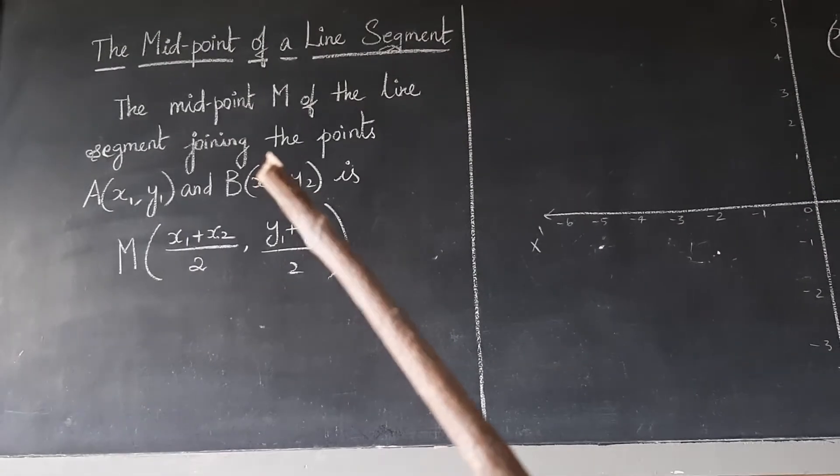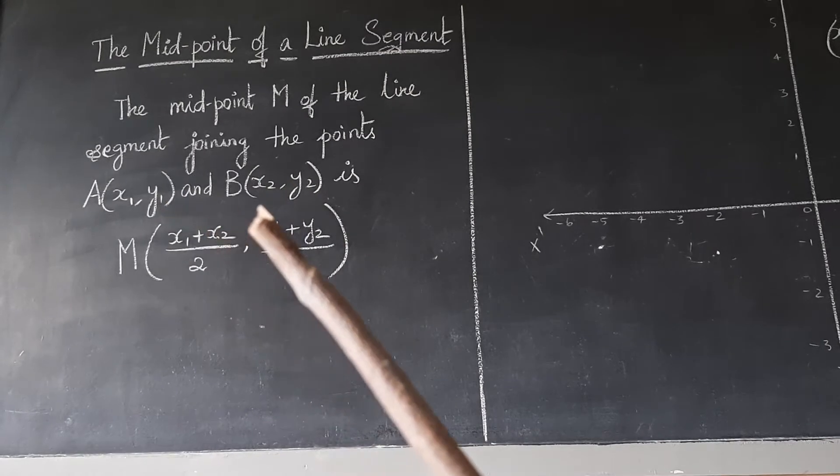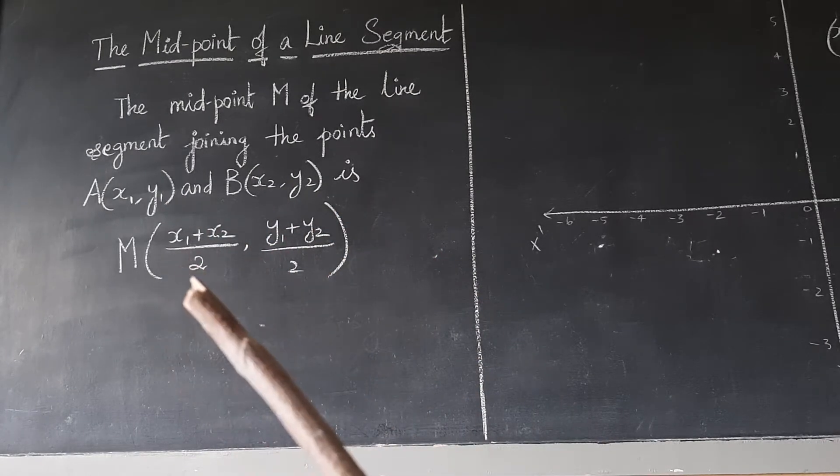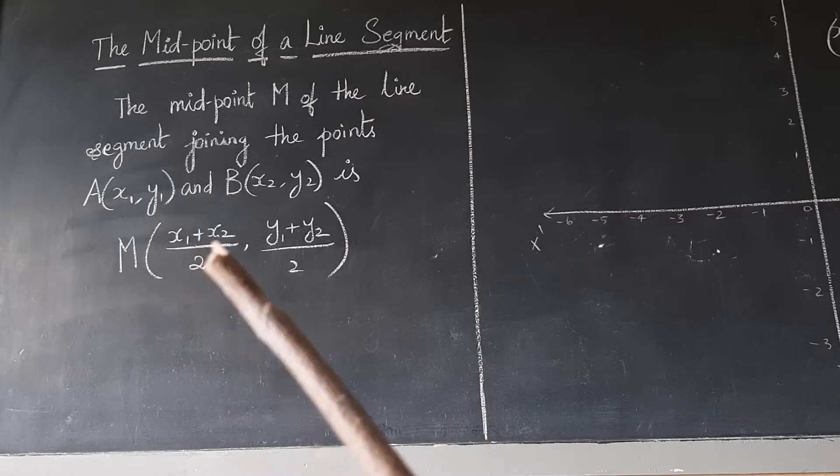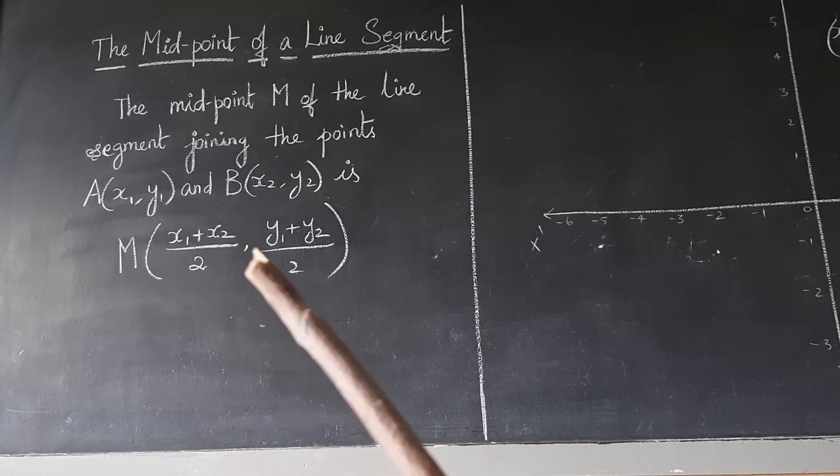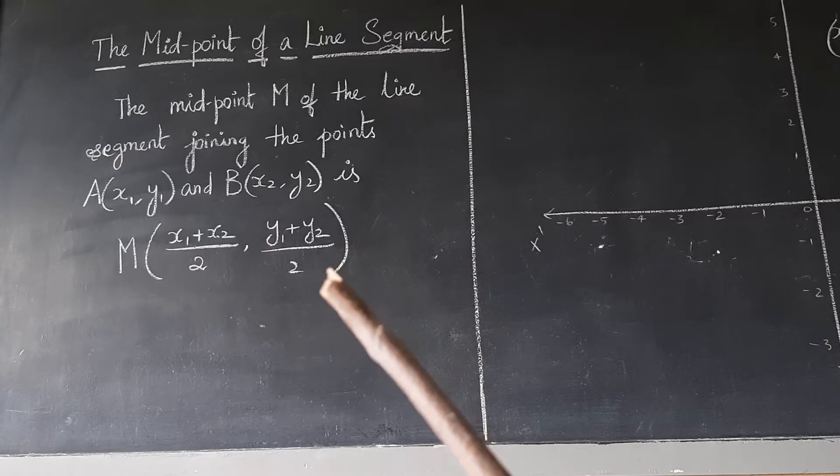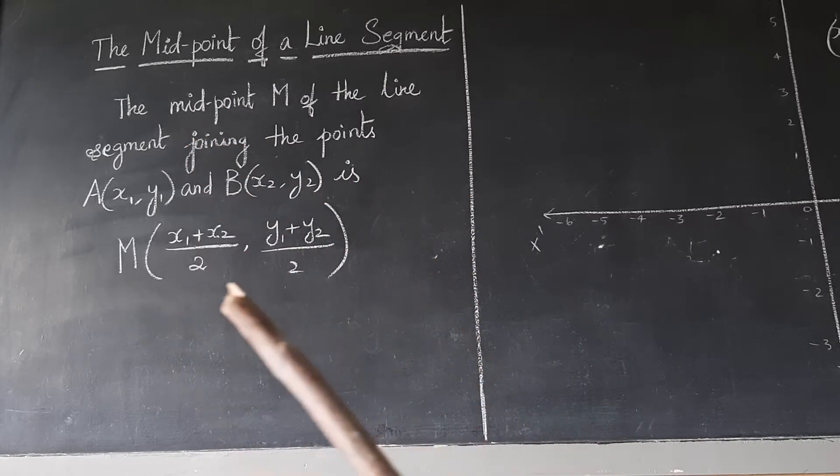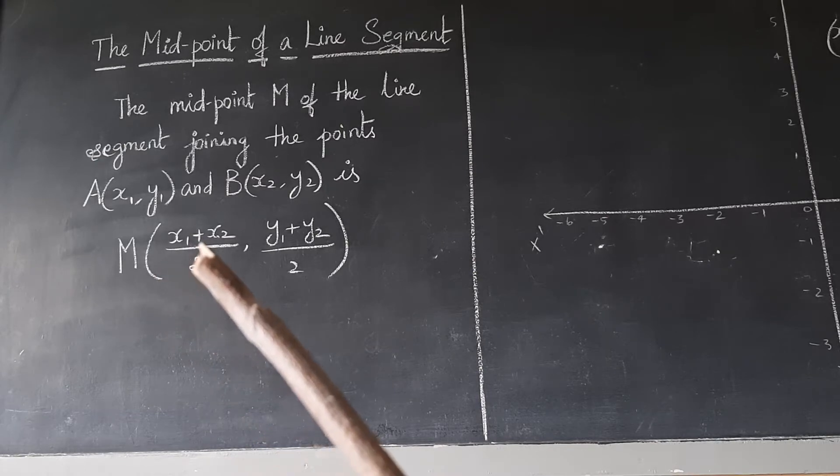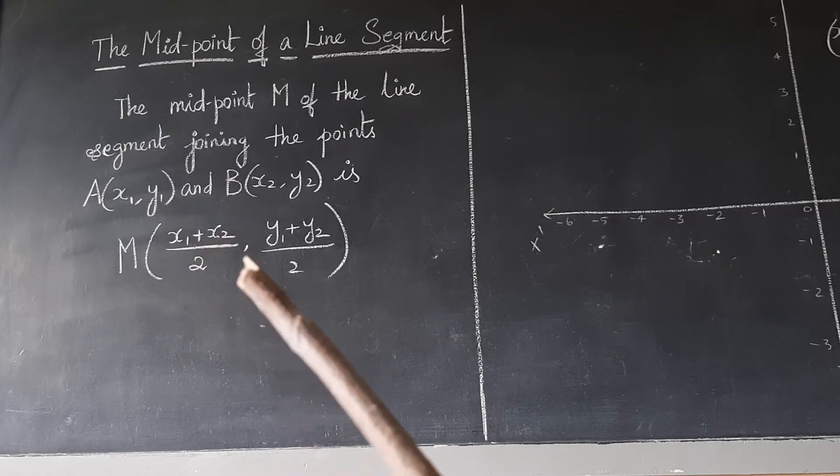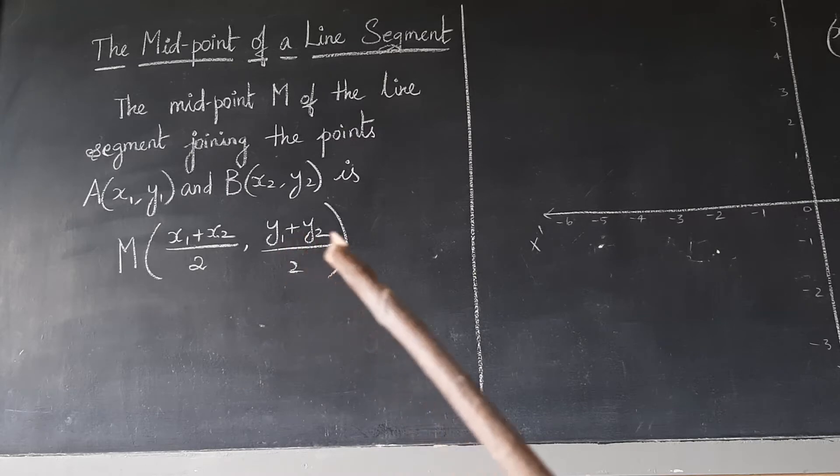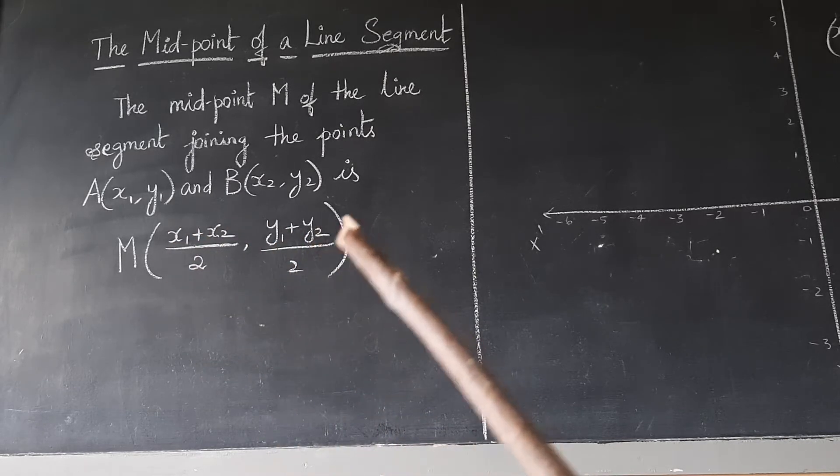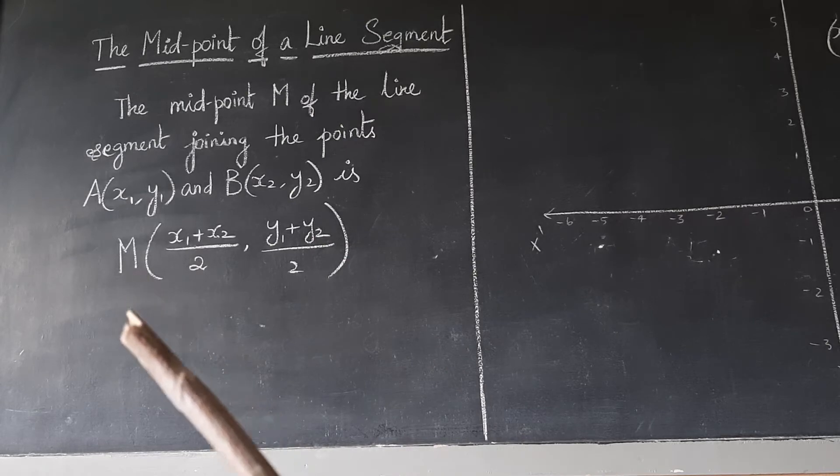The midpoint M of the line segment joining points A(x1, y1) and B(x2, y2) is M = ((x1 + x2)/2, (y1 + y2)/2). So the midpoint M is ((x1 + x2)/2, (y1 + y2)/2).